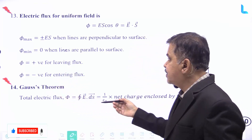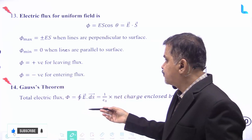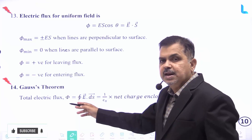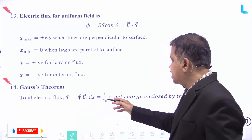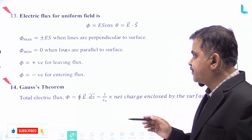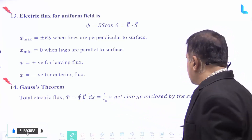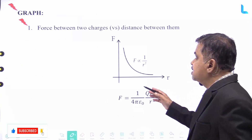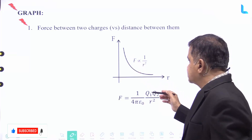Gauss's theorem is defined as: the total electric flux phi, given by the integral of E into ds, equals 1 by epsilon naught into the net charge enclosed by the surface. This is the mathematical representation of Gauss's theorem.